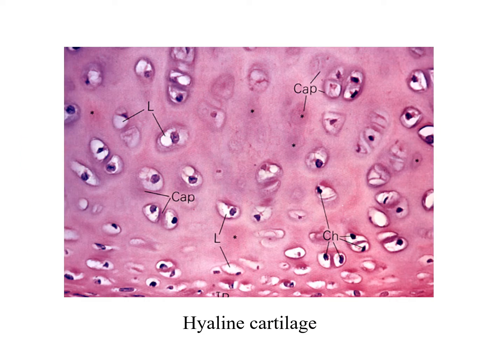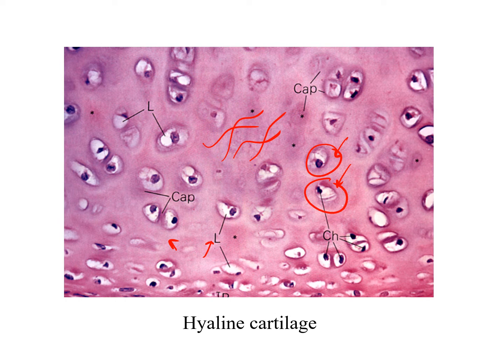In the slide we can see the lacuna with the chondrocyte inside, and we can see the matrix. However, we cannot see the collagen fibers, because the fibers and matrix have the same refractive index. Just as it is difficult to distinguish two objects of the same color at a distance, here we cannot resolve the collagen fibers from the matrix because of their matching refractive indices.